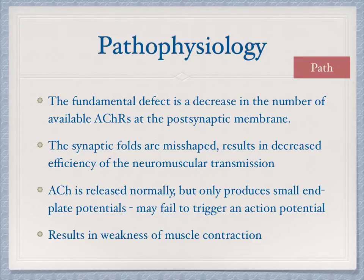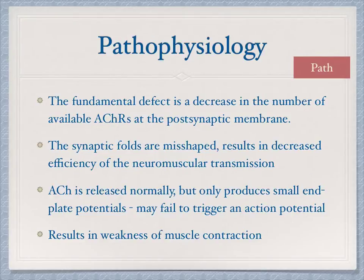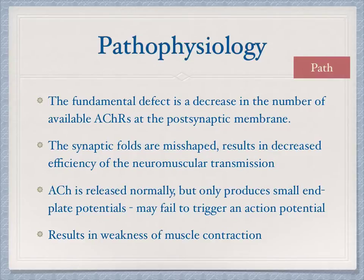In patients with myasthenia gravis, the defect is a decrease in the number of available acetylcholine receptors on the postsynaptic cleft. The synaptic folds are misshaped, resulting in decreased efficiency of transmission. Acetylcholine is released normally from the presynaptic membrane, but the problem is on the postsynaptic side — we don't have enough receptors. Not having enough receptors can cause a failed depolarization or failed action potential, resulting in muscle weakness and poor contraction.